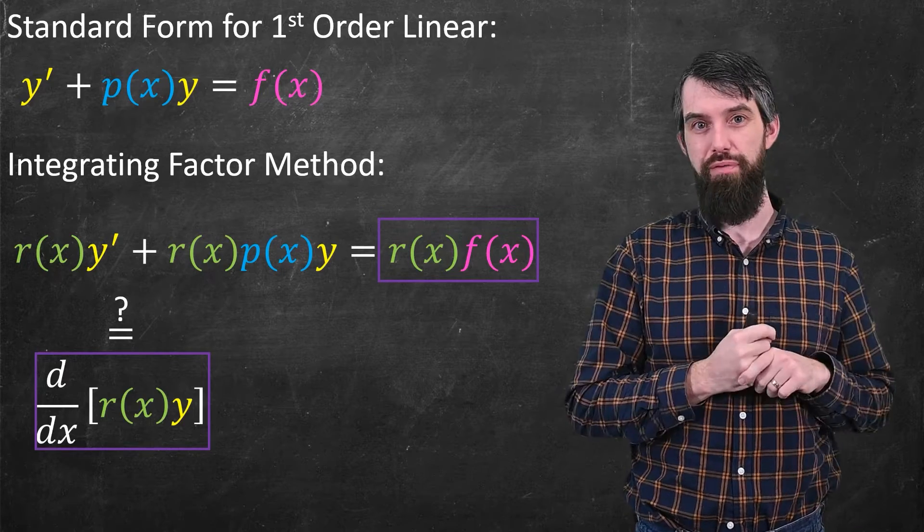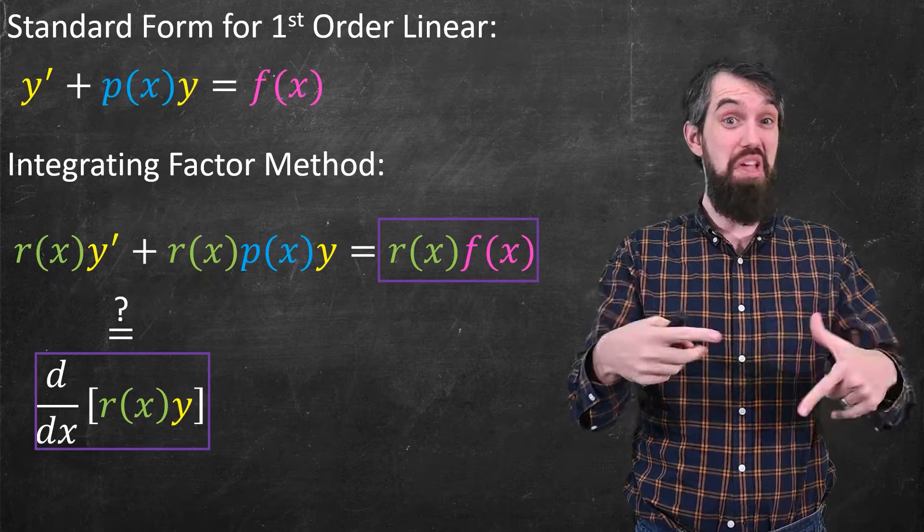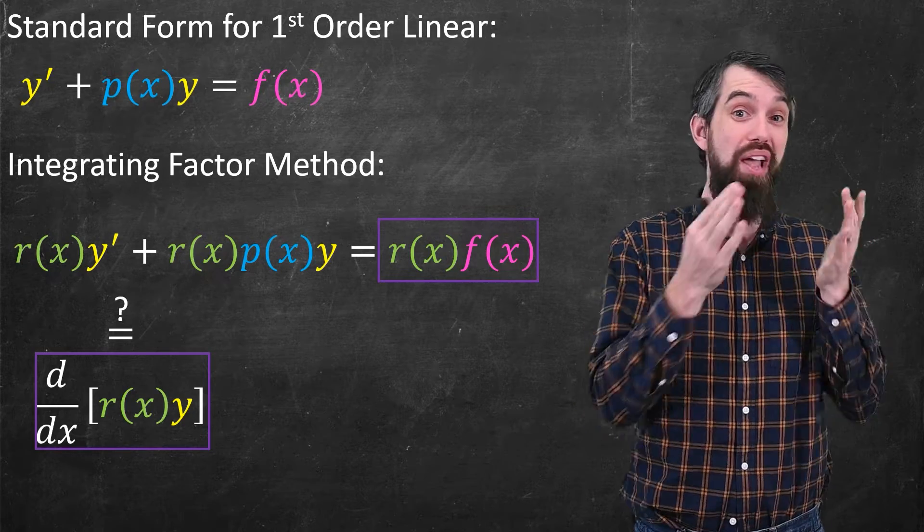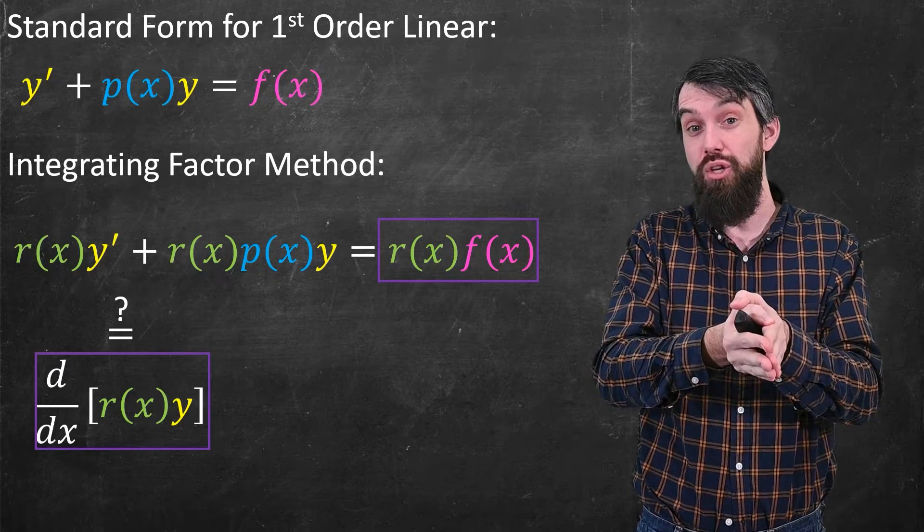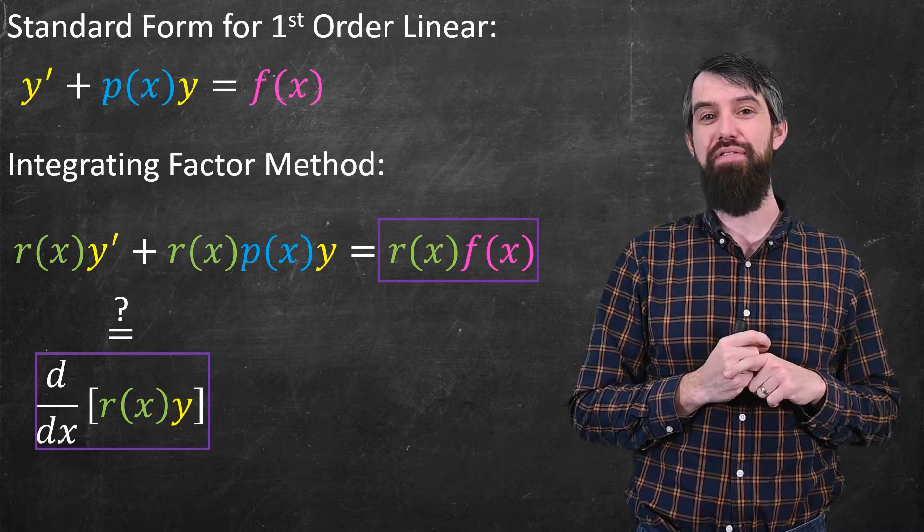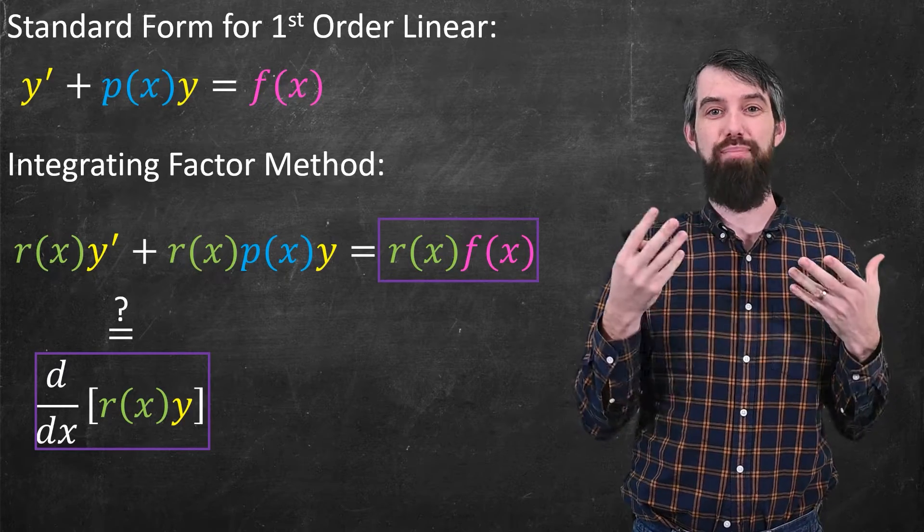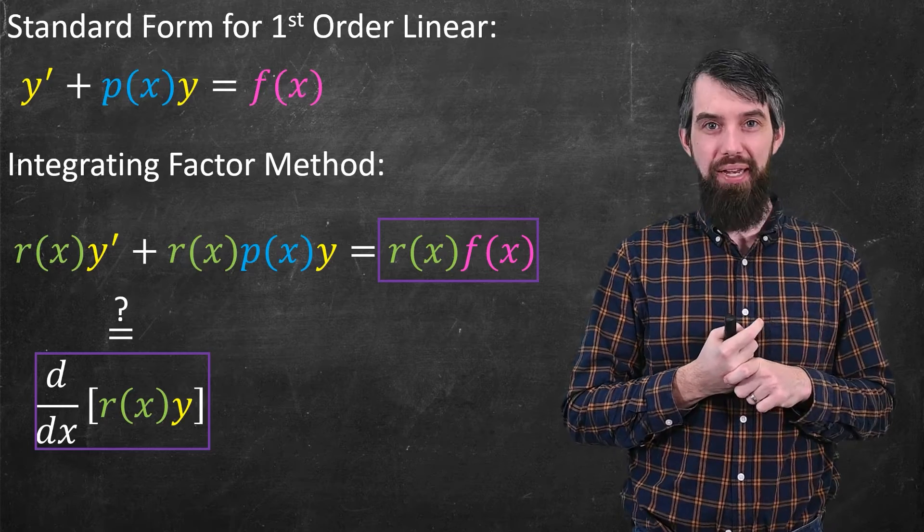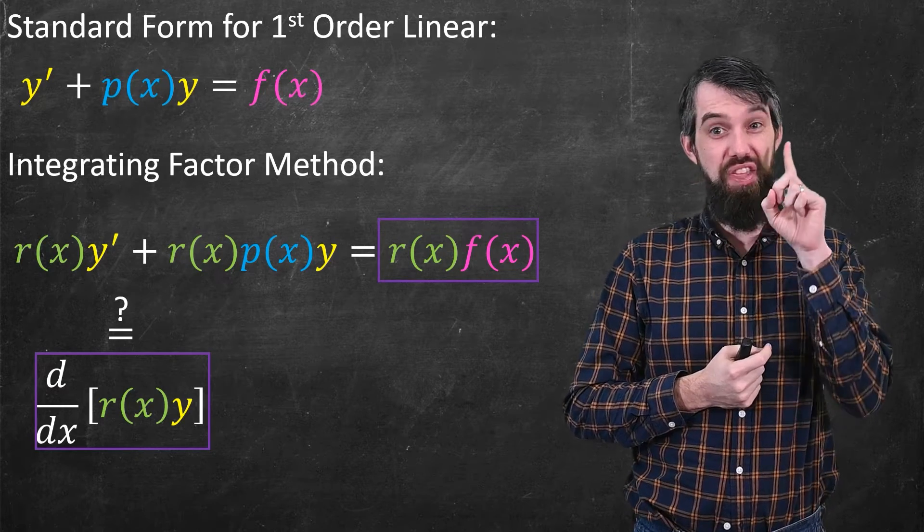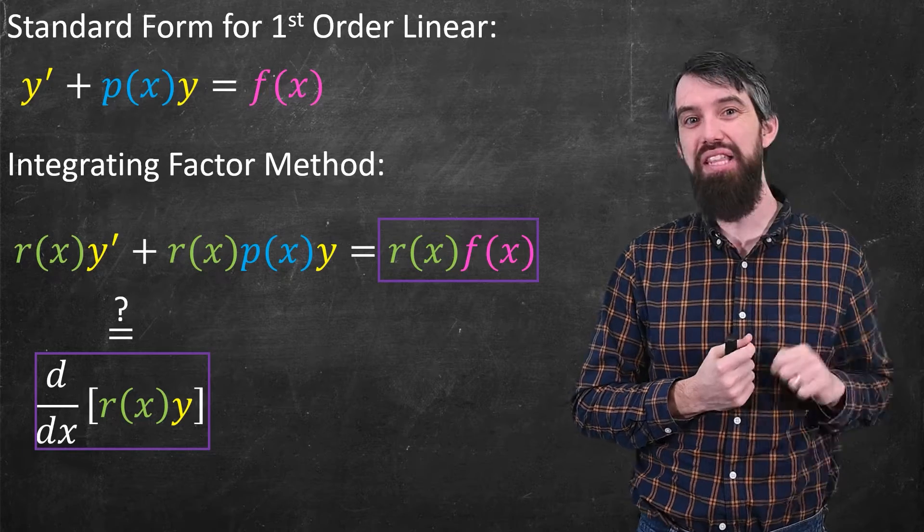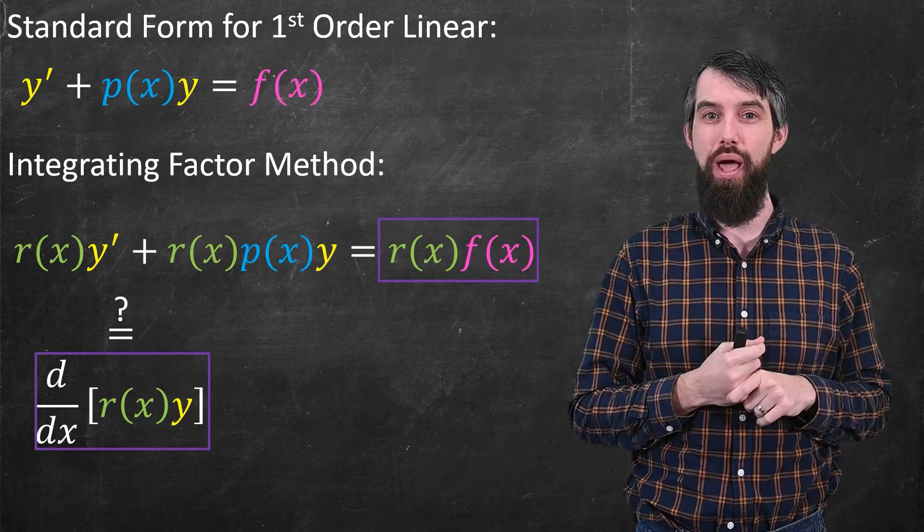And the reason that I would like to be able to do that is if I had, then on the left-hand side I'd have a derivative, on the right-hand side I'd have a function of x, and I could just integrate both sides with respect to x. That would tell me my r times y divided up by r, and that would tell me my y. So I would love if I could write that left-hand side in this format as the derivative of r(x) times y(x). But I mean, it doesn't at all look like that right now. Well, what if I tailored the r(x) to be exactly the thing I needed, such that it was possible to rewrite the left-hand side in this way? So how could I find that?